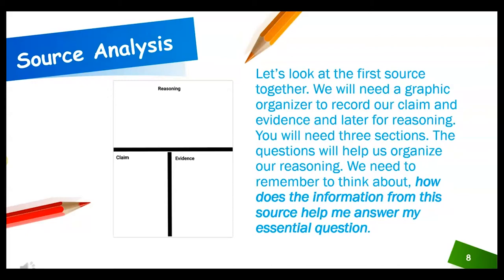Let's look at the first source together. We will need a graphic organizer to record our claim and evidence and later for reasoning. You will need three sections. Notice that my reasoning section is a lot larger, because remember that's taking your claim and evidence and putting it together with reasoning. This can be done by folding your piece of paper in half and in half again. The top two pieces could be your reasoning, and then the claim could be on the left and the evidence could be on the right. The questions will help us organize our reasoning — we need to remember to think about how does this information from this source help me answer my essential question.